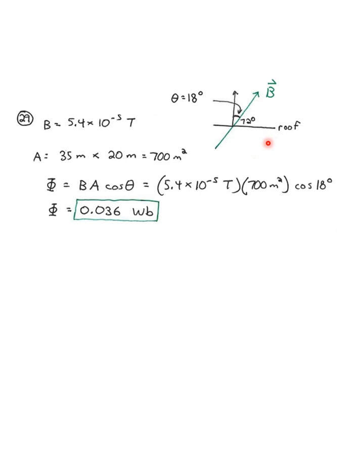Now, if you think about the roof, and I've drawn here in black a vector that is perpendicular to the roof, the relevant angle is this little bit in here, theta equals 18 degrees. So, for our figuring out the flux, it's that 18 degree angle that's going to matter.